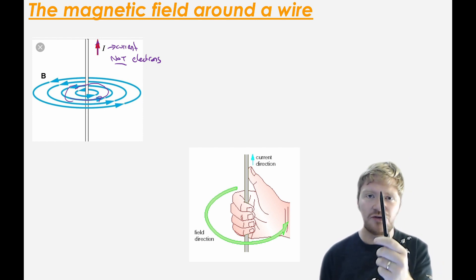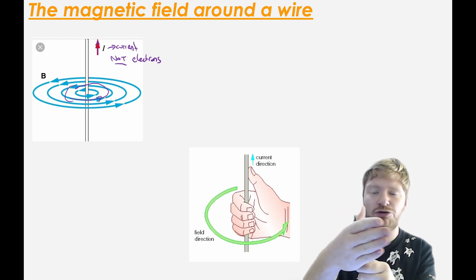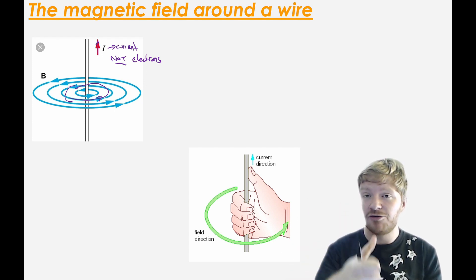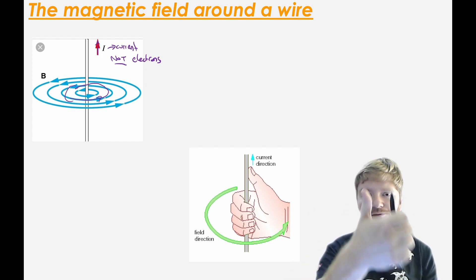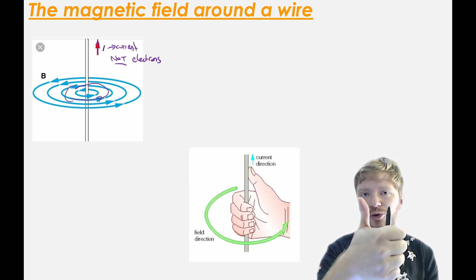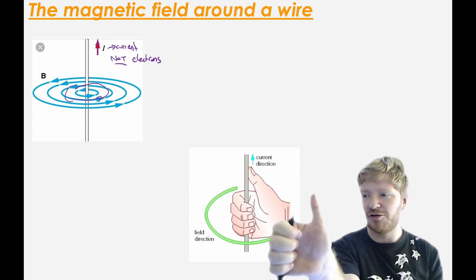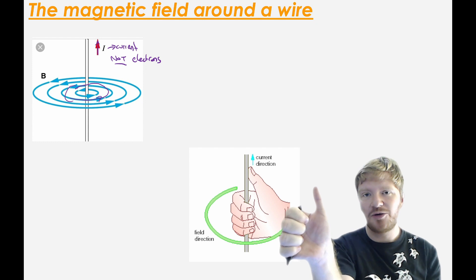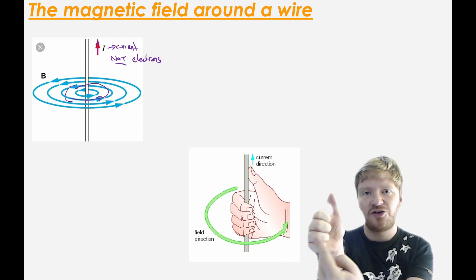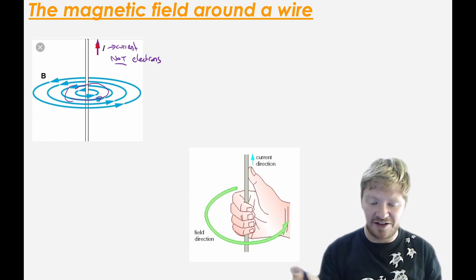So you point your pen in the direction that the current's going, and you grab it with your right-hand, right-hand grip rule. And then you have your thumb pointing in the direction of the current like that. Well, what we can now say is that the direction that your fingers curve around in is the direction of the magnetic field.